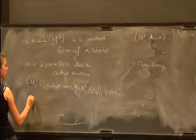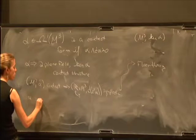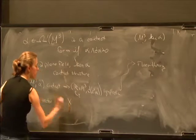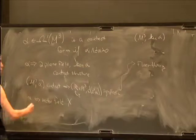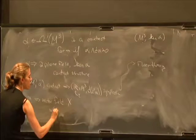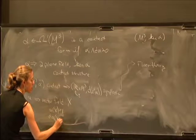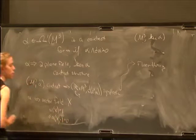Another feature and corresponding technique that comes up is that, again, when you choose this contact form alpha, then you immediately get a vector field on the manifold. It's called the Reeb vector field. And it's just defined by being the vector field that satisfies the equations alpha(x) equals 1 and d alpha evaluated on x and anything else is 0.